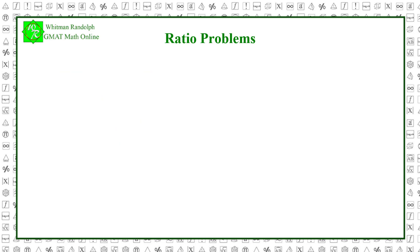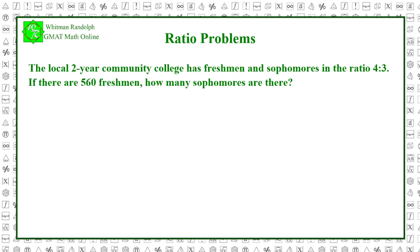Here's another example. The local two-year community college has freshmen and sophomores in the ratio 4 to 3. If there are 560 freshmen, how many sophomores are there? Let's find the solution.